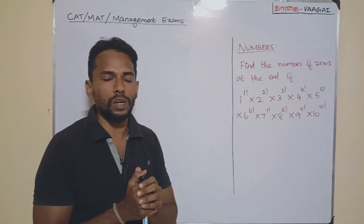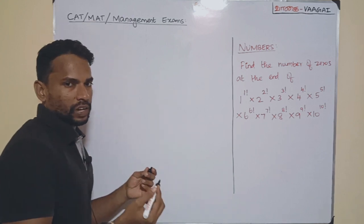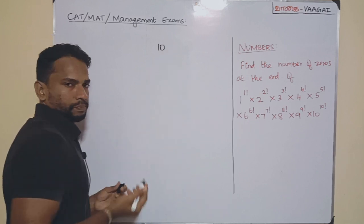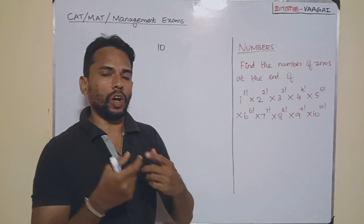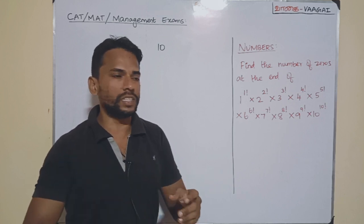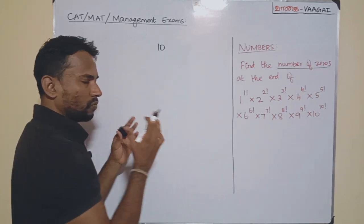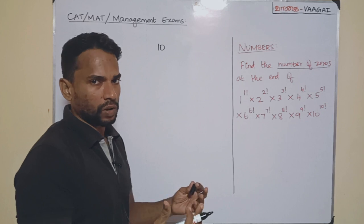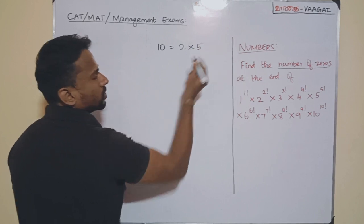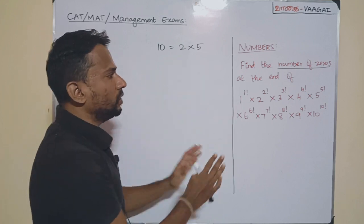We are going to use the same technique to find the answer. First, a quick revision: whenever we need to find the number of zeros, all we need to concentrate on is the power of 10 — that is, 10 to the power of how much — because the maximum number of 10s we have in our expression will decide the number of zeros. Remember that 10 is constructed by 2 × 5, because to get a 10 we need to pair up one 2 with one 5.